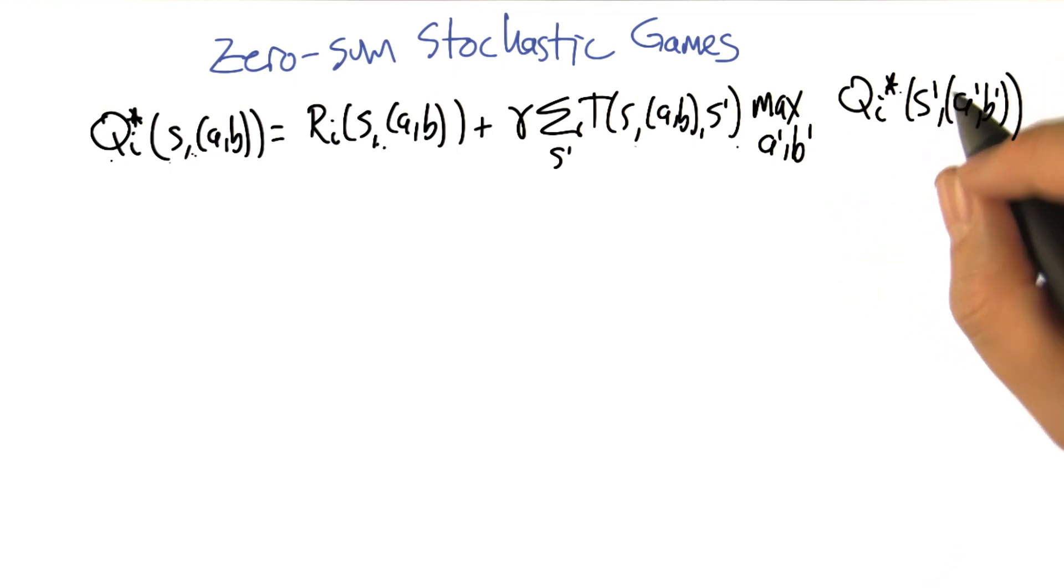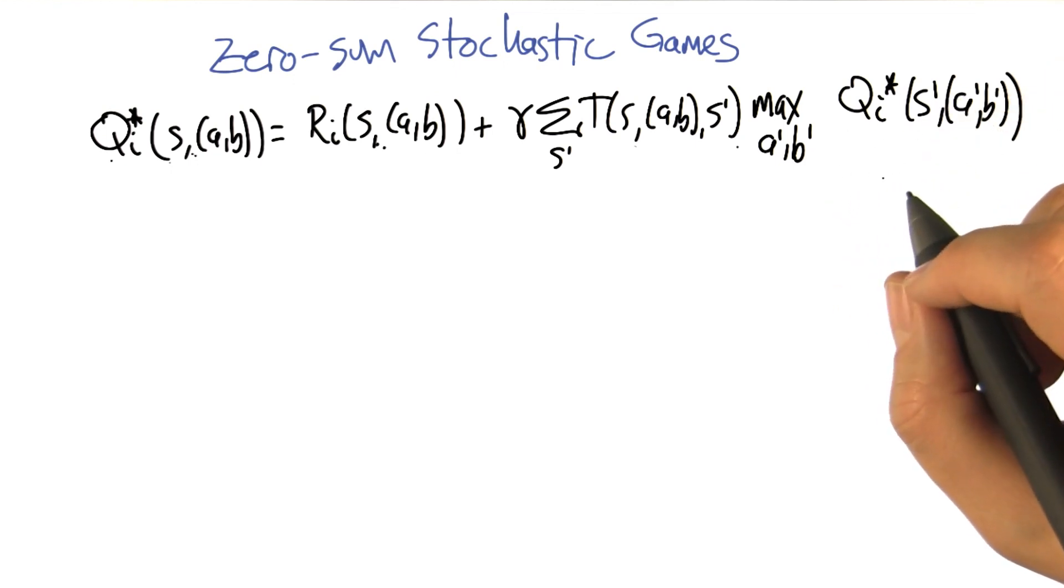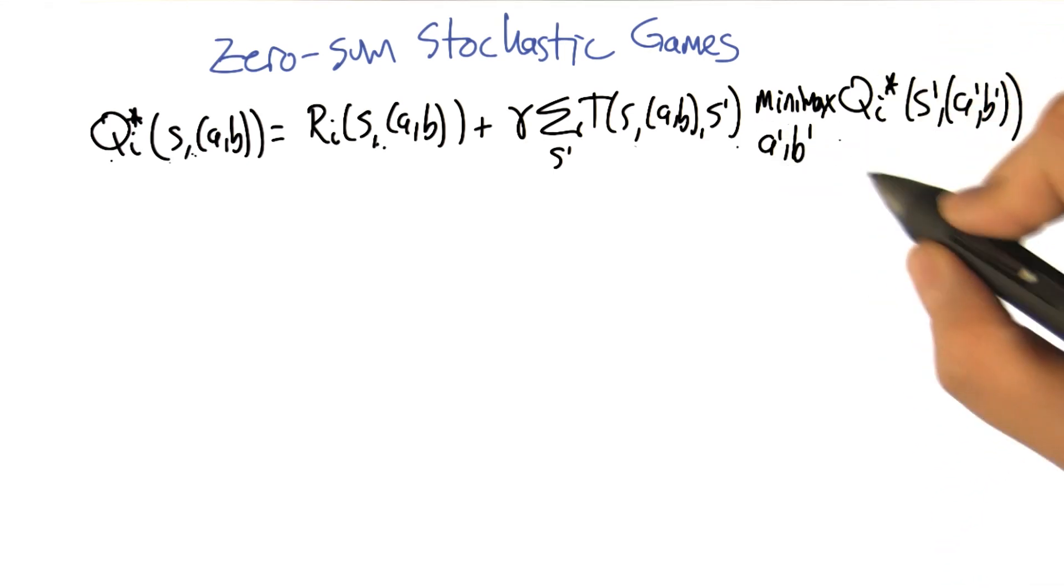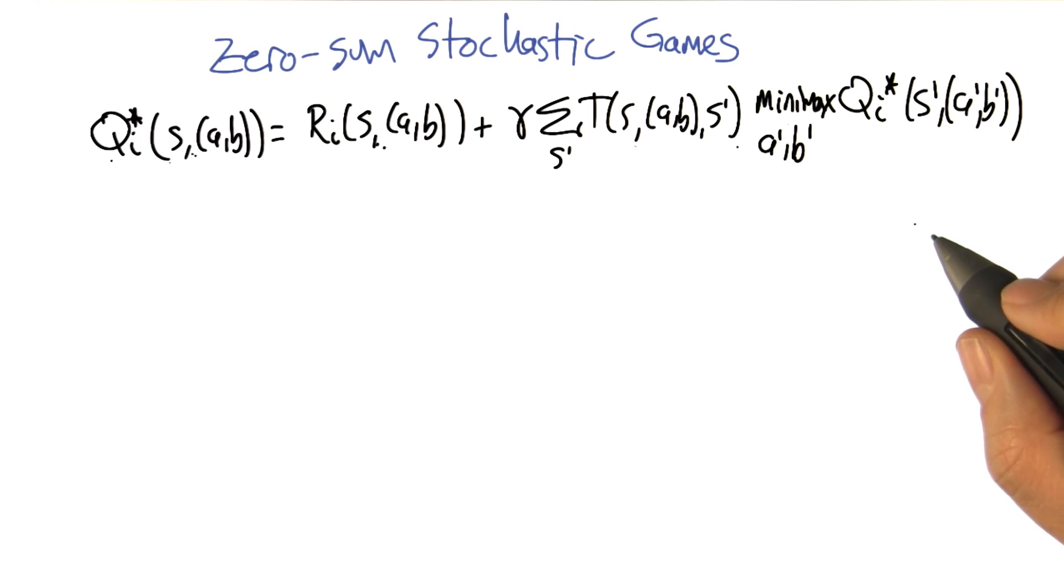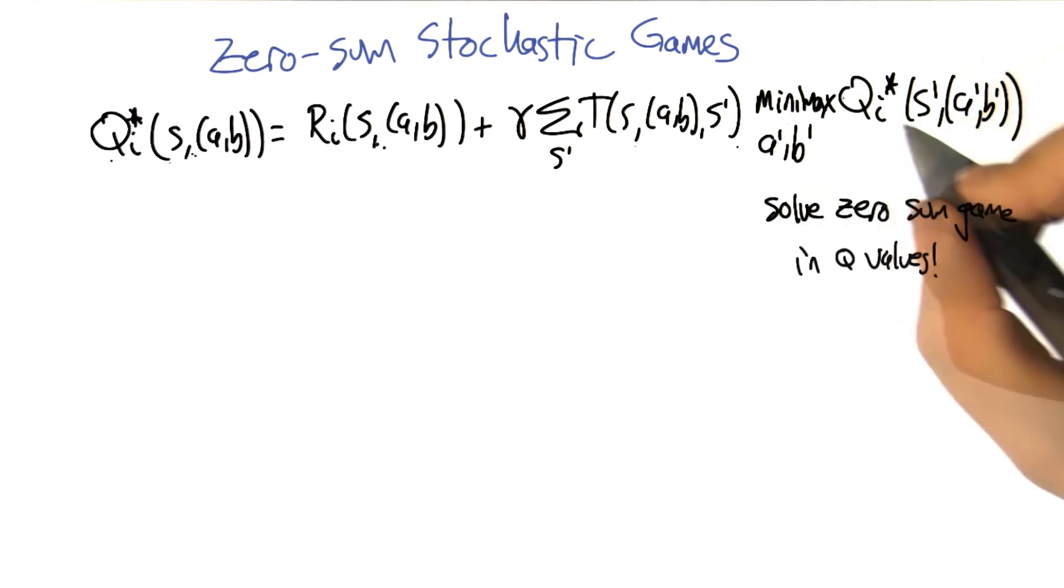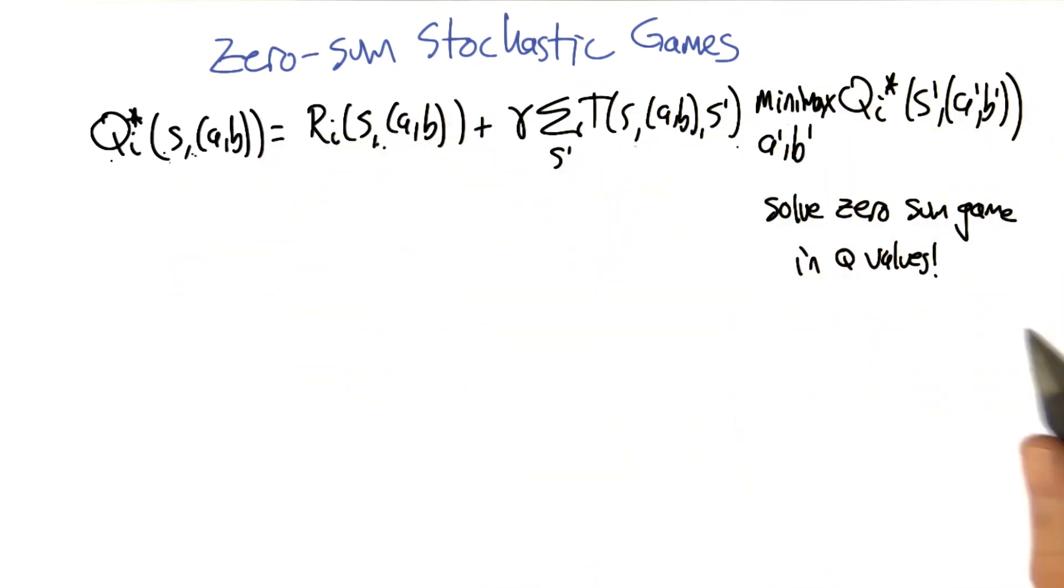So it's not reasonable to assume that. In fact, what was it that we were assuming when we had a zero sum game that was just a single stage, just a single game, and then we were done? Oh, that people were doing Minimax. Right. And Maximin. So what if we change the equation to look like that? So what I mean by this is when we evaluate the value of a state, we actually solve the zero sum game in the Q values, and take that value and use it in the context of this equation.